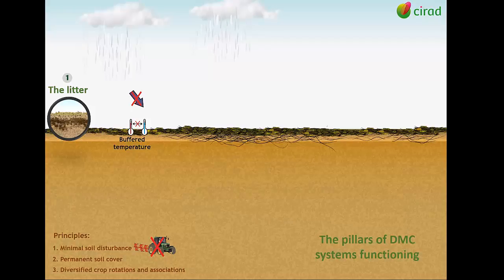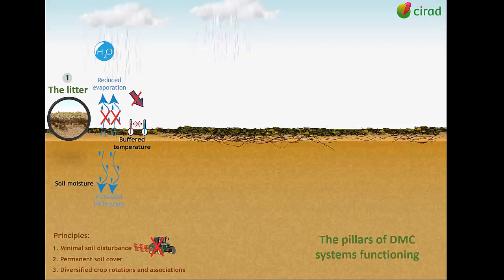This reduces the evaporation rate and increases the infiltration rate, both contributing to the conservation of moisture in the soil profile. The properties of the permanent litter modify the dynamics of soil organic matter, water, and nutrients to make it more efficient and less vulnerable to external disturbances.